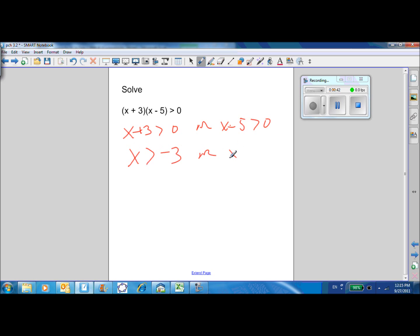With amusing consequences, we get X is greater than negative 3 or X is greater than 5. So that's all the points basically to the right of negative 3.